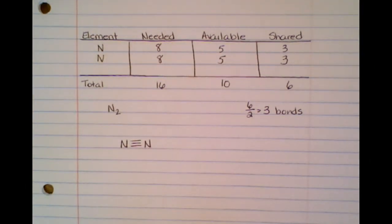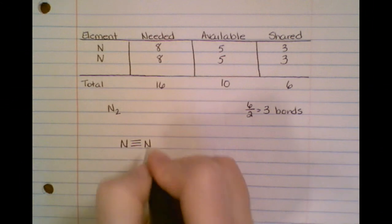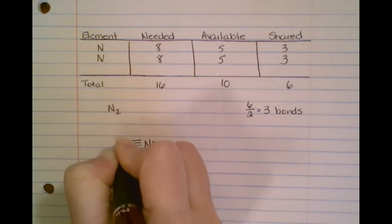Now what do I need to do? Do I satisfy the octet? Well, this is just two, four, six, so I need to add two dots on the outside of this nitrogen and two dots on the outside of this nitrogen.